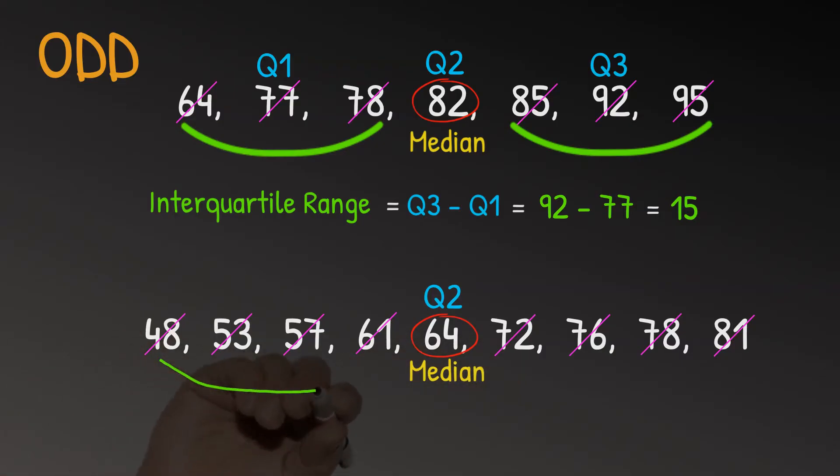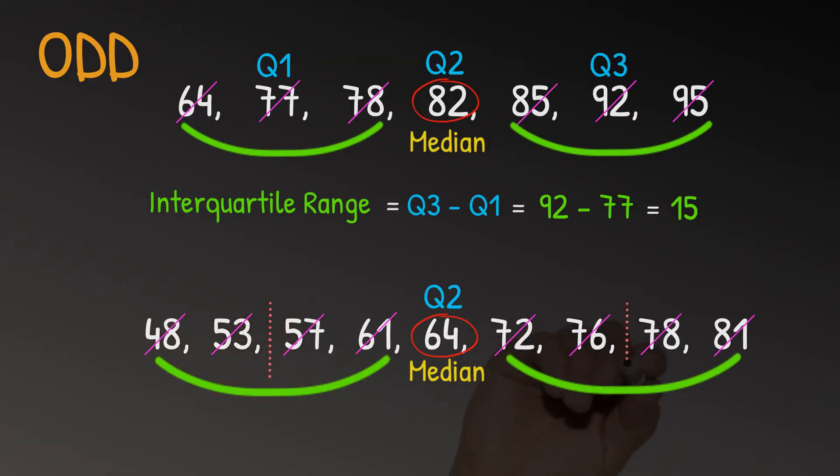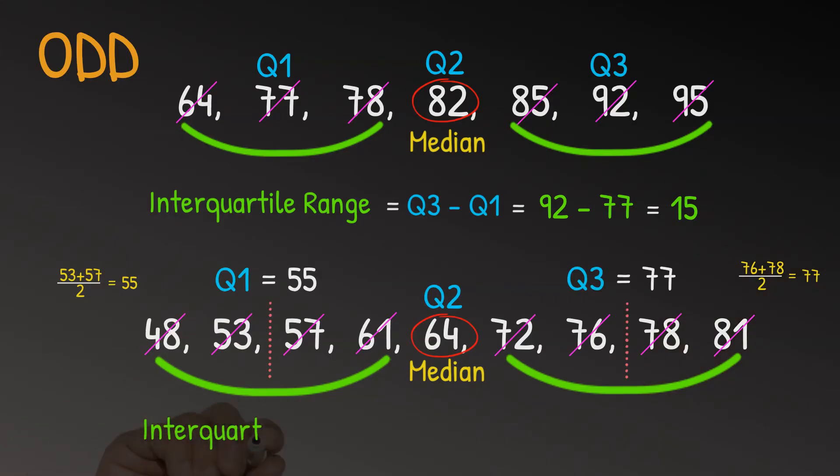But this time we have four values before Q2 and four values after Q2. This means Q1 lies between 53 and 57 and Q3 lies between 76 and 78. Now, quite often, it might be very obvious which number is Q1 and Q3. But if you are in any doubt, just add the two numbers together and divide by two. So for Q1, we have 53 plus 57 divided by two, which is 55. And for Q3, we have 76 plus 78 divided by two, which is 77. And this means the interquartile range is Q3 minus Q1, 77 minus 55, which is 22.